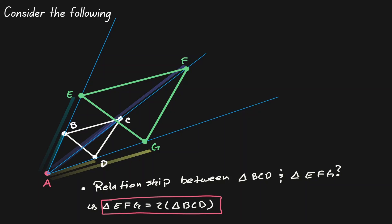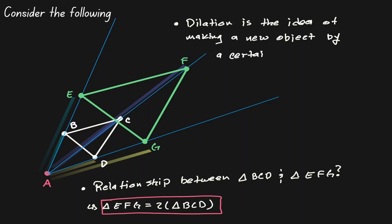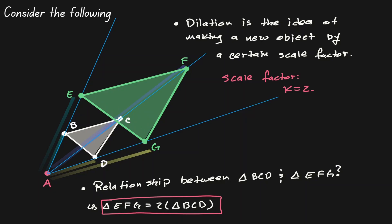And this is the idea behind a dilation. A dilation is the idea of creating an image by a certain scale factor — which in this case, the scale factor has a value of two. The parameter that we use for scale factor is the letter K. So we can say that we got triangle BCD and created this green triangle that was twice as big as the white triangle. The point that we were creating our distances from is something we call a point of dilation.